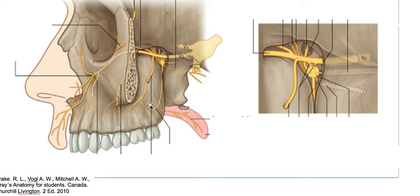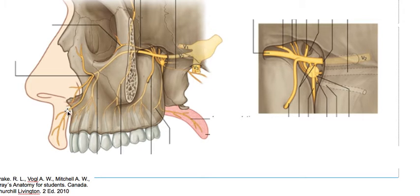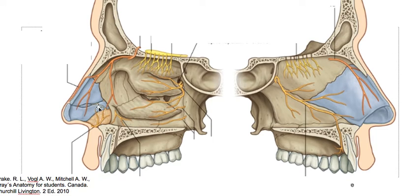So we have the superior alveolar nerve — anterior, medial, and posterior. The anterior and medial are branches of the infraorbital nerve. Terminal branches of the infraorbital nerve include palpebral branches, superior labial branches, and nasal branches. Here we have nasal branches of the infraorbital nerve and terminal branches of the superior anterior alveolar nerve.